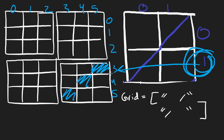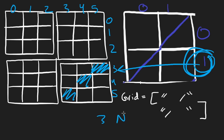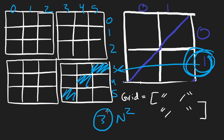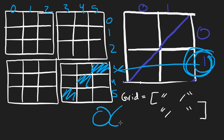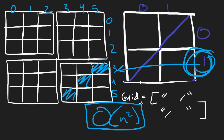The overall time complexity is just going to be three times the dimensions of the input grid. Since it's a square grid, it's n squared — three times that is still O(n²). We're declaring extra memory for the scaled grid, so the space complexity is also O(n²). Let's code this up.